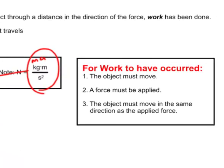Please bear in mind that for work to have occurred, you must be able to check off the following three. The object must move. If it doesn't move, no work was done. A force must be applied to make that object move. And the third step is crucial. The object must move in the same direction as the applied force. Otherwise, you ain't getting nowhere.